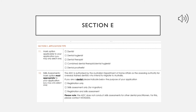Section E does not require much writing — you just have to mark the field you are interested in. Most people go for dentistry, so for dentist you have to mark 'dentist' from Part 11, and in Part 12 you have to mark 'registration only.' It has been written that ADC is not going to conduct skills assessment, so marking the other two options may cause problems. It's better to mark registration only.